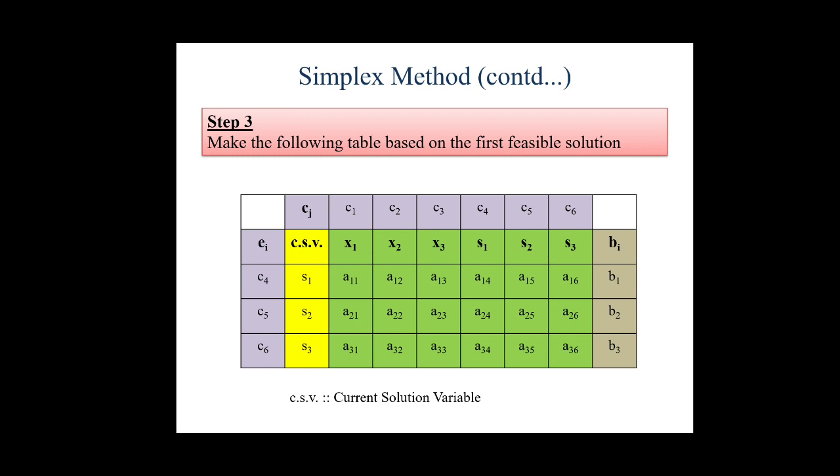Step 3: We make a table which is based on the first feasible solution. So what you observe here - the line in purple color shows the coefficients which are presented in the objective function. That is c1, c2, c3 up to c6 are our objective function coefficients. CSV stands for current solution variable. We derived our solution from the assumed values s1, s2, s3. So we have marked them in the CSV column, highlighted in yellow color.